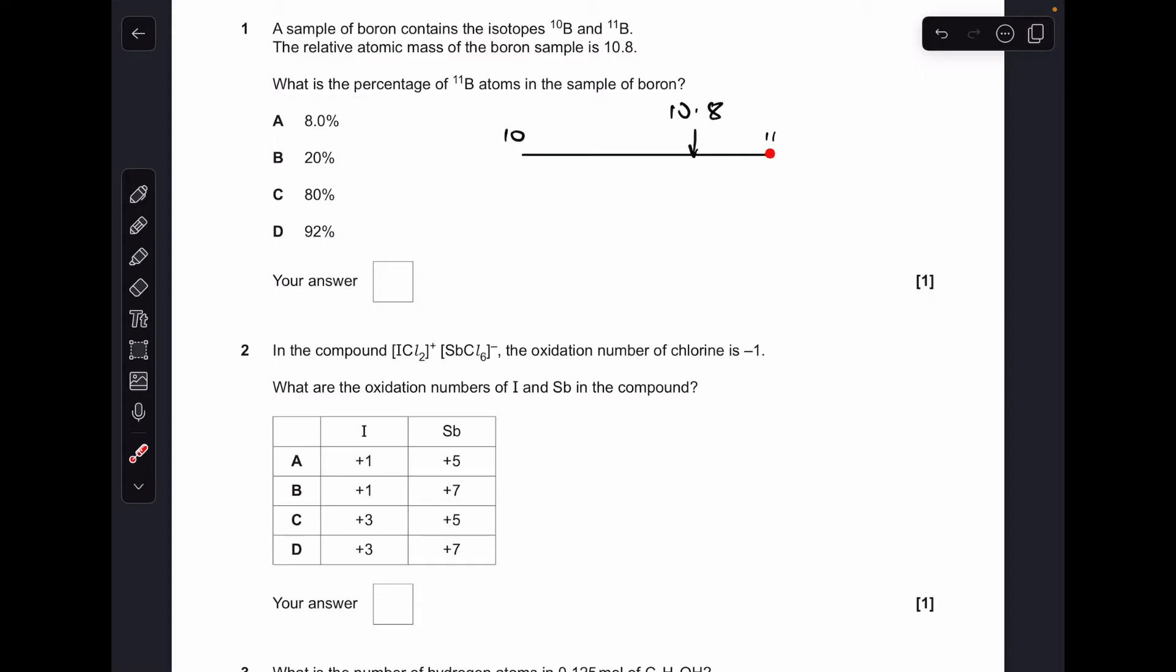So we've got two isotopes of boron, 10 and 11. The relative atomic mass is sitting at 10.8, so obviously the 11 isotope must be pulling greater than the 10. So the 11 is pulling the average towards itself, so from that difference of 1, there's a 0.8 pull from the 11 isotope, which is 80%. So C was the answer.